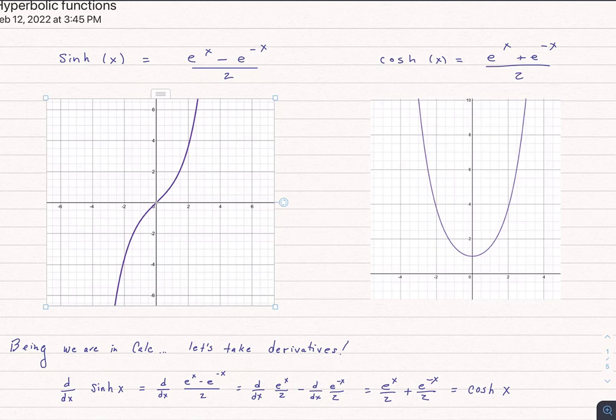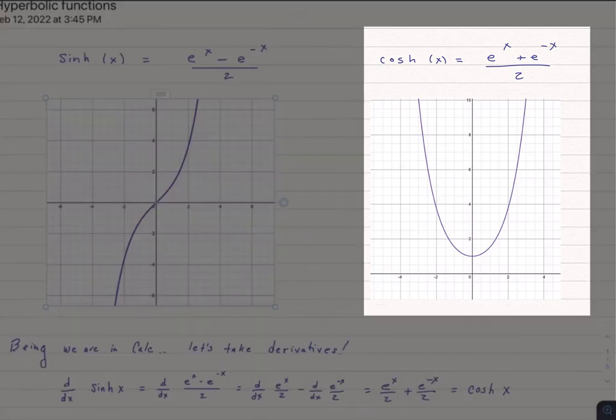It's hyperbolic sine and hyperbolic cosine that we're going to focus on. And of the two, hyperbolic cosine is probably the most useful, because if you notice the shape of hyperbolic cosine on the right, that is actually the shape that's formed if you take a string between your two fingers and let it hang